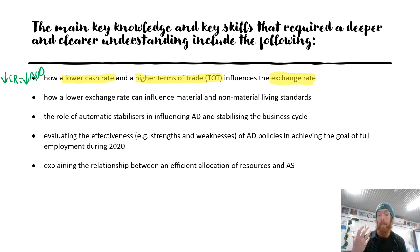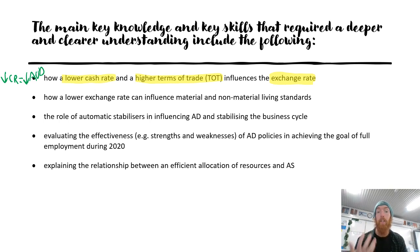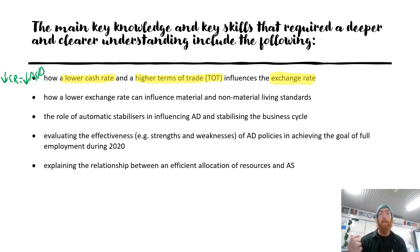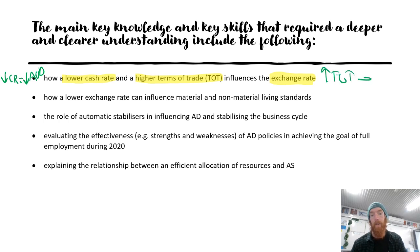In terms of a higher terms of trade: when we have a higher terms of trade, the prices we're receiving for exports are higher and/or the price we're paying for imports is lower. Importantly, quantities remain constant — a lot of our exports are commodities which are inelastic in demand because China needs our iron ore. So a higher terms of trade means more export credits or fewer import debits, leading to exchange rate appreciation as demand for the Australian dollar increases.